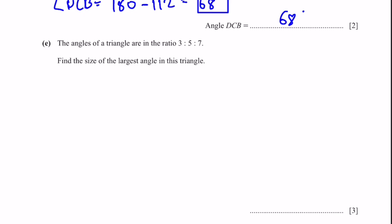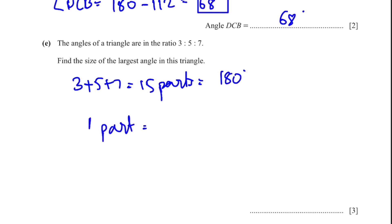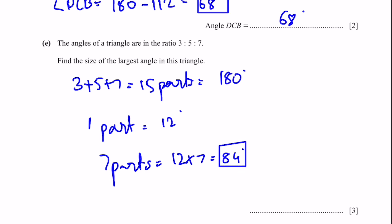Part E: The angles of a triangle are in the ratio 3:5:7. Find the largest angle. 3 + 5 + 7 = 15 parts = 180°. So 1 part = 12°. The largest angle (7 parts) = 7 × 12 = 84°.